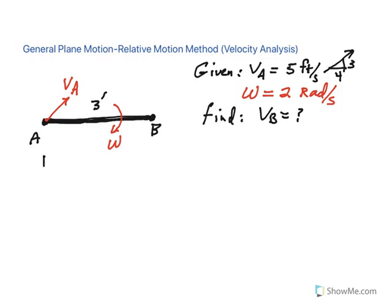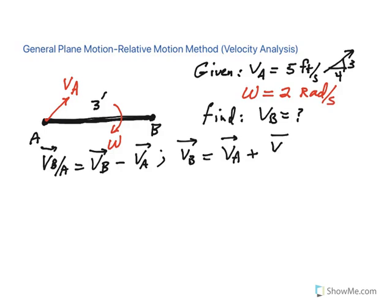First of all, we know that velocity of B relative to A, by definition of relative velocity, is VB minus VA. So if you go ahead and rearrange this equation and solve for velocity of B, that becomes velocity of B equal velocity of A plus velocity of B slash A, means velocity of B relative to A.